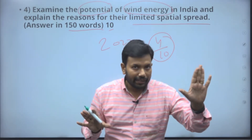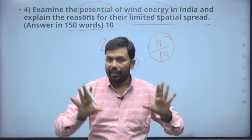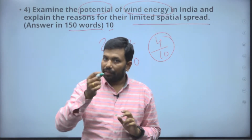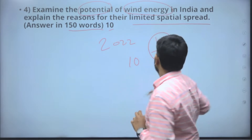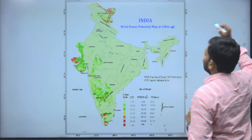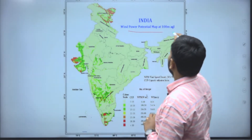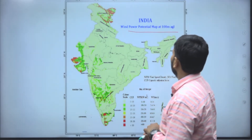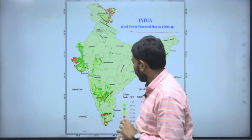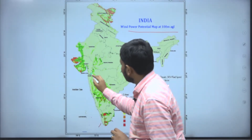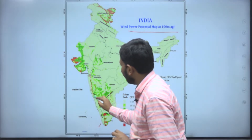You can write it classifying by western ghats, eastern ghats, south, or state-wise. Now let's go deeper into the concept. You have to draw a wind power potential map showing speeds at 100 meters and the distribution across regions.